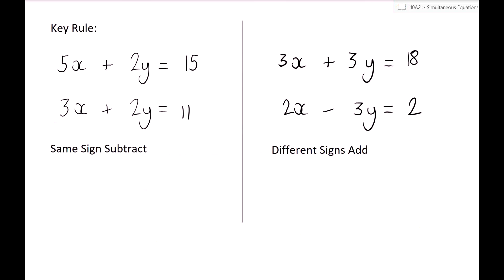So key rule there, right at the end. When you look at your equations, you want to look at the signs. If the two signs are the same, you then want to subtract your two equations. So remember, same sign, subtract. If you've got different signs, in that case you want to add your two equations together.